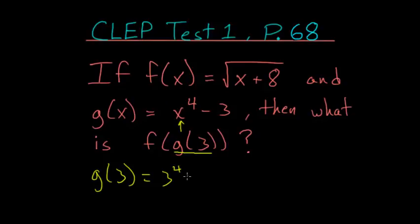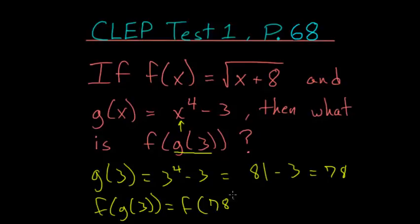So we have 3 to the fourth minus 3. 3 to the fourth is 81 minus 3, leaving us with 78. So now f of g of 3 is the same thing as f of 78.